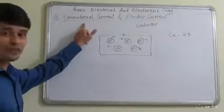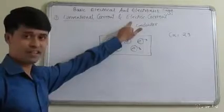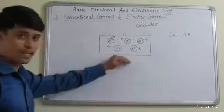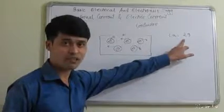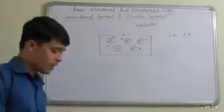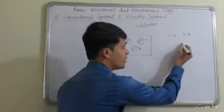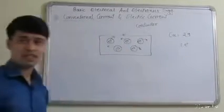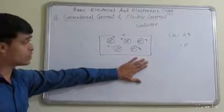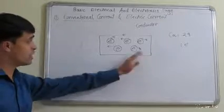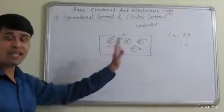First, what is the difference between the conventional current and the electric current? We are considering one conductor — suppose it is of copper — having a pentenized atomic number. Because of that, the last orbit has one electron. A conductor is a combination of atoms, therefore it is a combination of many electrons revolving or moving in any direction.